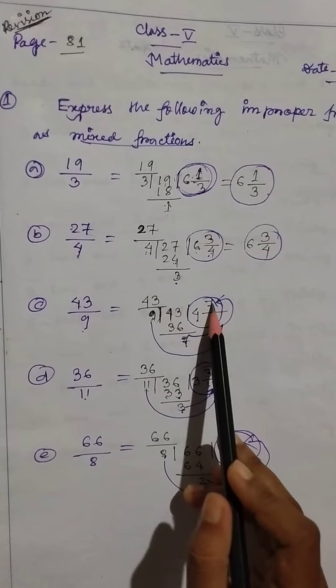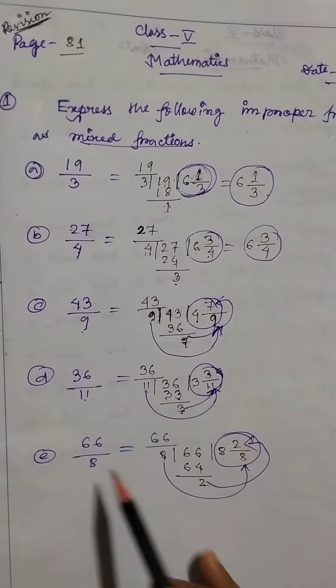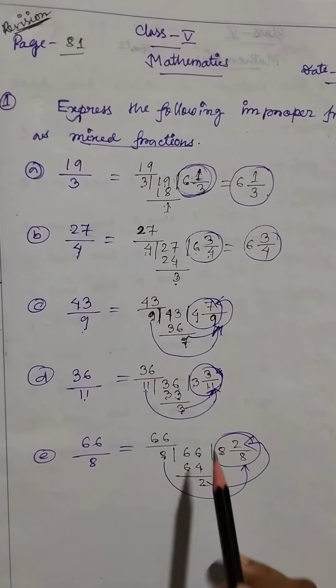Okay, so 4 7 by 9. Then 36 by 11 and 66 by 8. Okay, so ibabbe tomra kurbe.